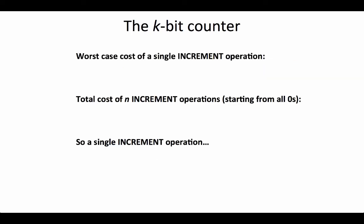Let's summarize this one more time. The worst case cost of a single increment operation is k, which is in big O of k. However, the total cost of n increment operations appears to be less than 2 times n, which means that the cost of a series of n increment operations is in big O of n.